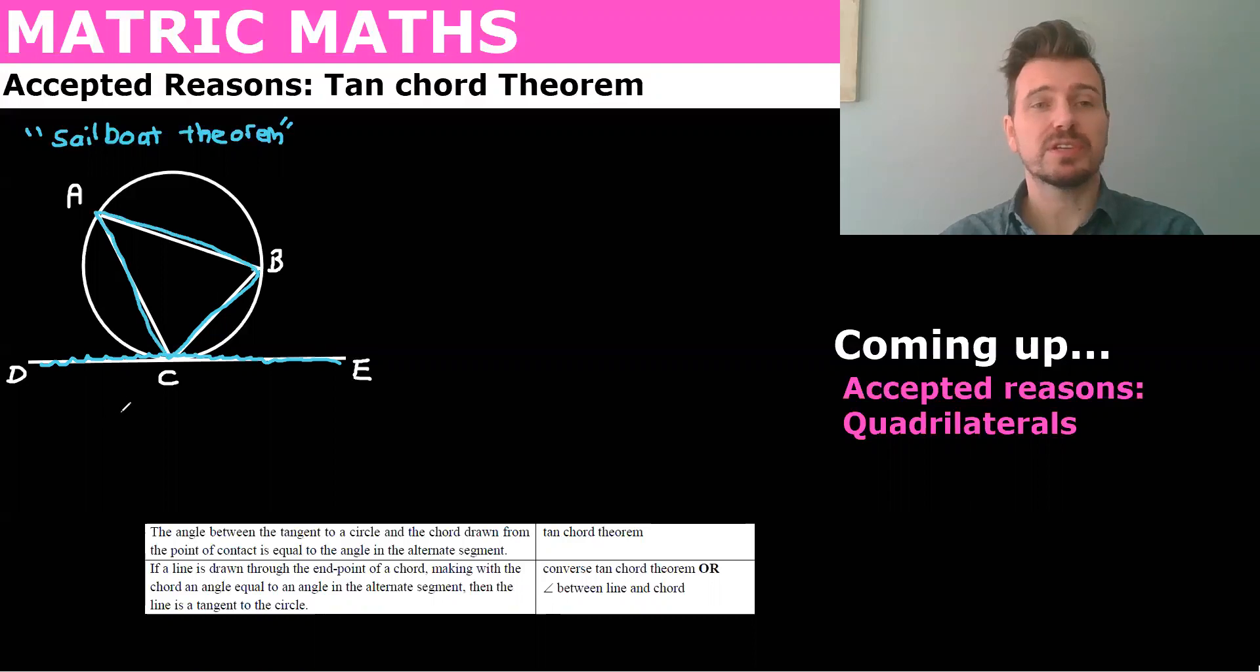And what this theorem says is that if you have an angle here, BCE, that is equal to the opposite angle, the angle on the other side. So what I usually do is I make a Z like this. I would do it in different colors so you can see. So I would make a Z, and it's the angle opposite to that. So it's over there and there.